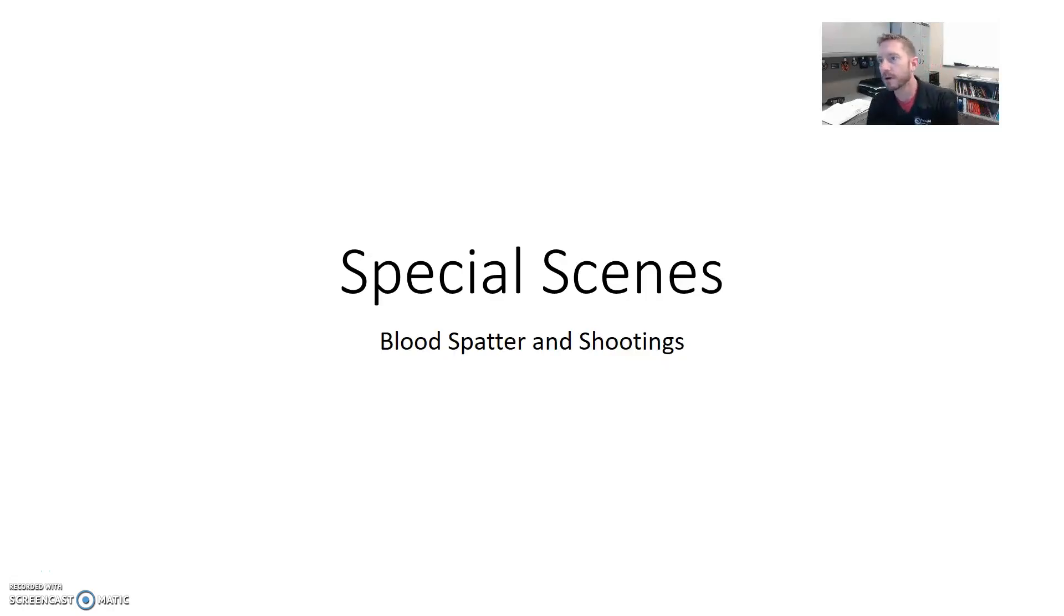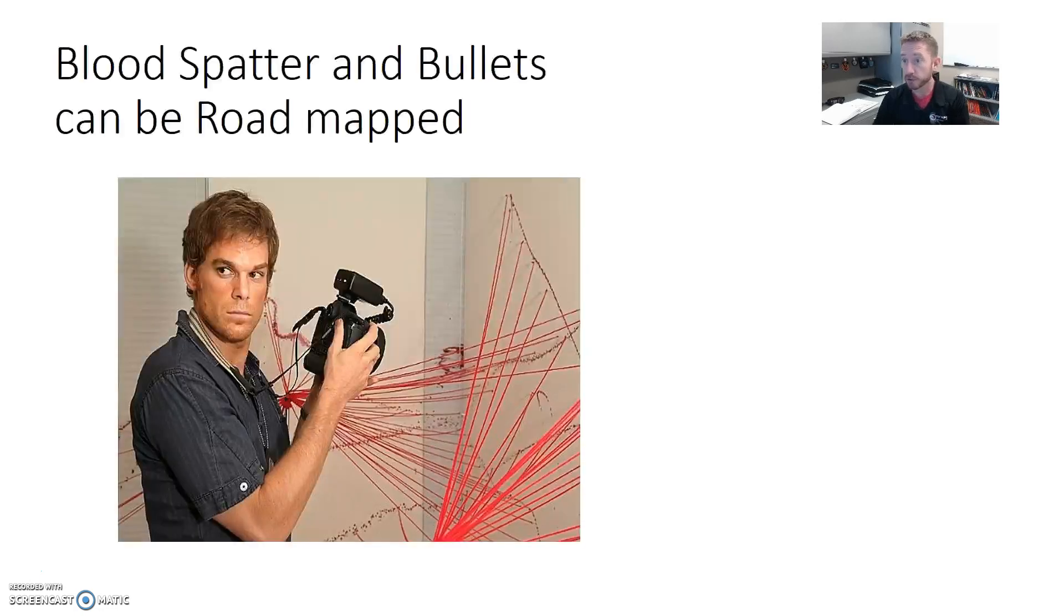Alright, so continuing on with our multi-week look at Chapter 9, this week we are focusing in on blood spatter analysis and shooting analysis, or shooting reconstruction. These two scenes link together very well because they both deal with something called road mapping.